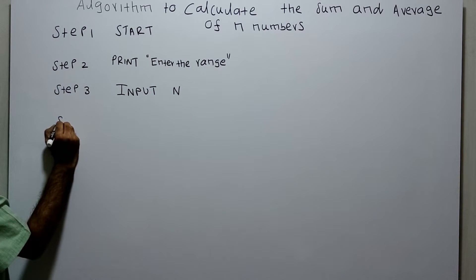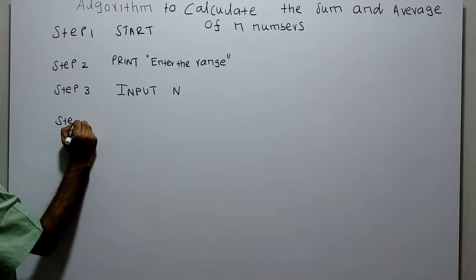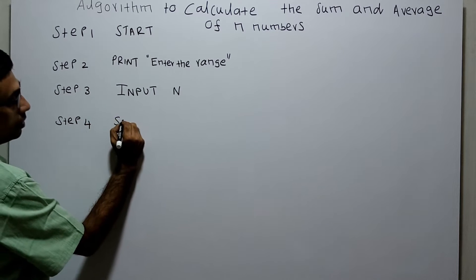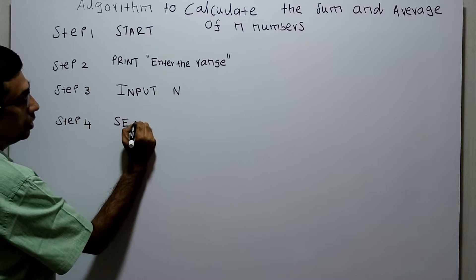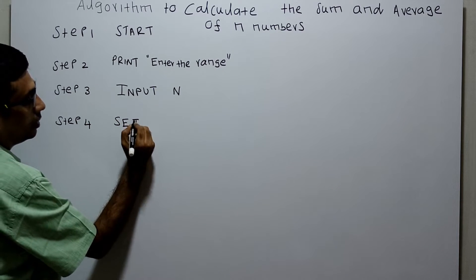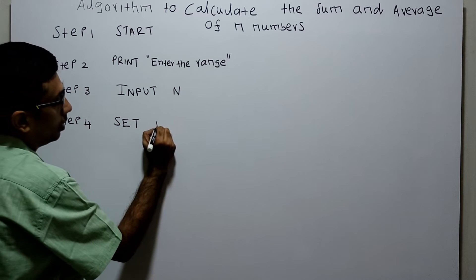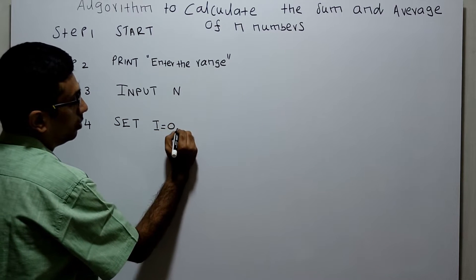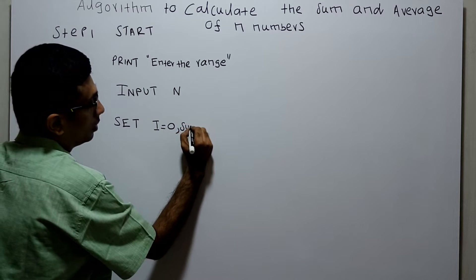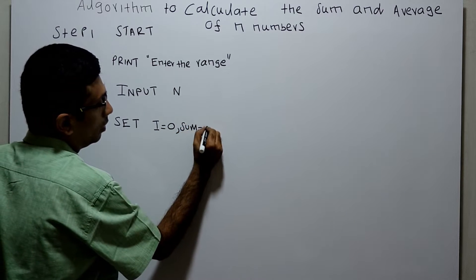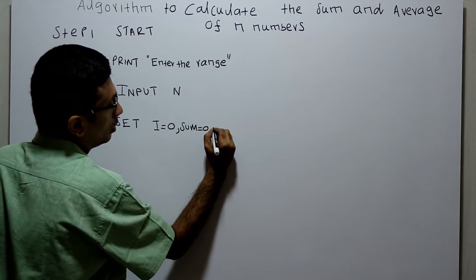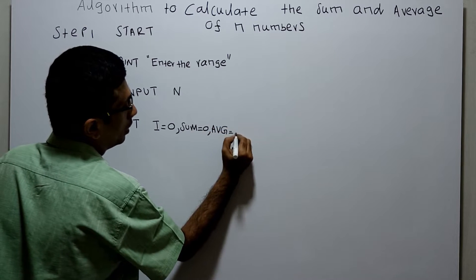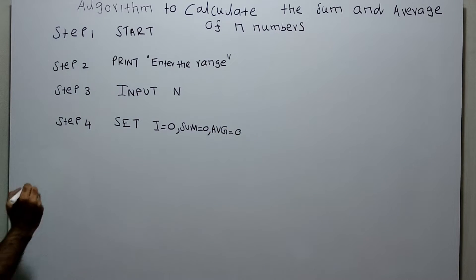Step 4: I am initializing — 'init' is a keyword for initialization. I initialize variable i equal to 0, sum equal to 0, and a variable for average equal to 0.